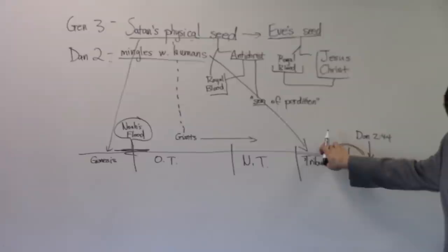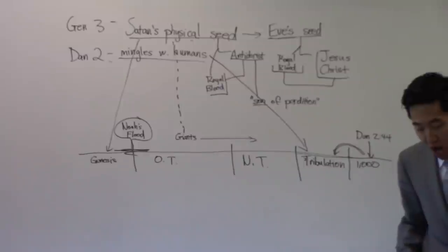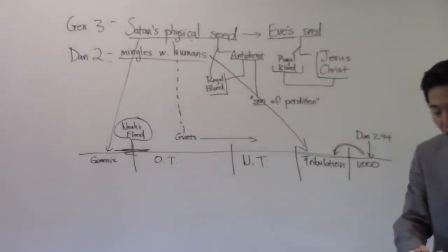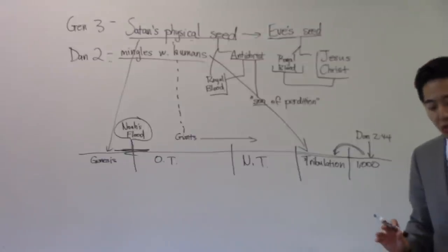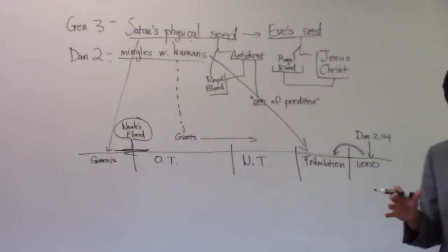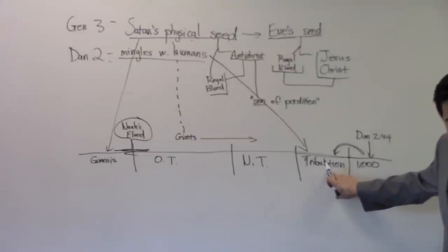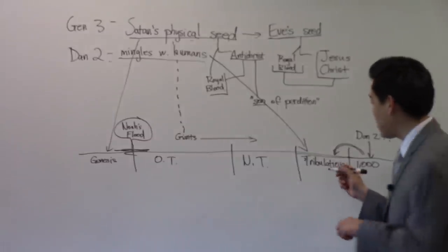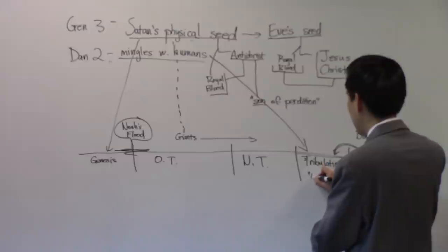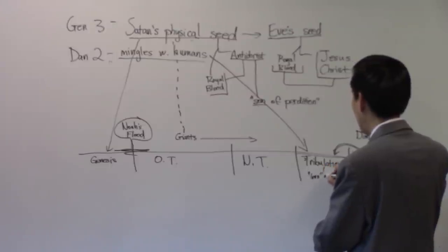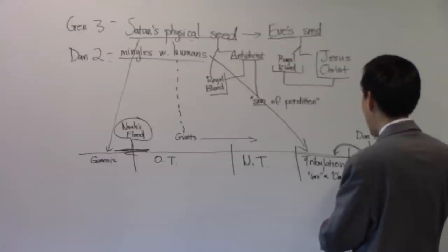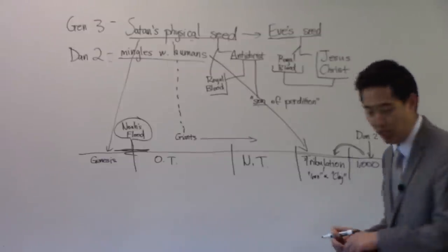Let's start at verse 41 through 43. And whereas thou sawest the feet and toes, part of potter's clay and part of iron. So there's a clay mingling with this iron here. The kingdom shall be divided. But there shall be in it of the strength of the iron, for as much as thou sawest the iron mixed with miry clay. So this kingdom has the element of the iron, whoever the iron is. But this iron is mingled with clay, whoever clay is. We're going to find out who the iron is and who the clay is.